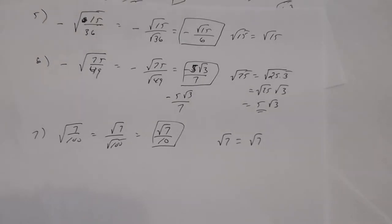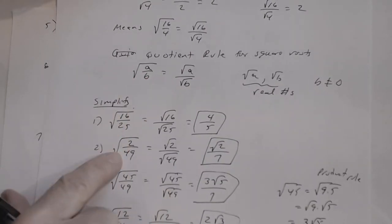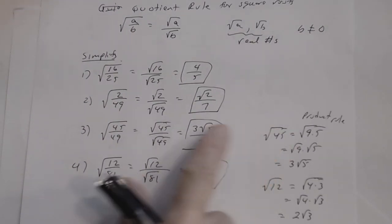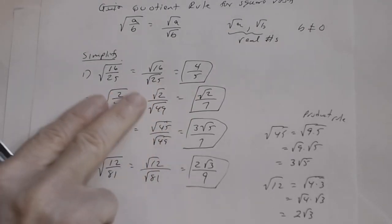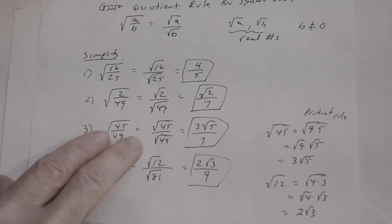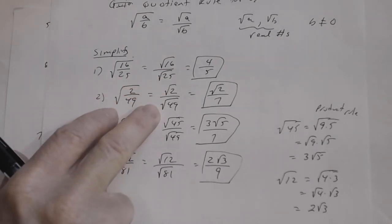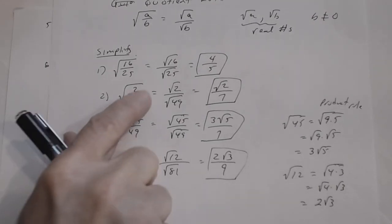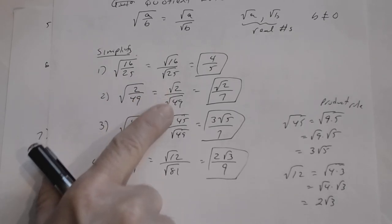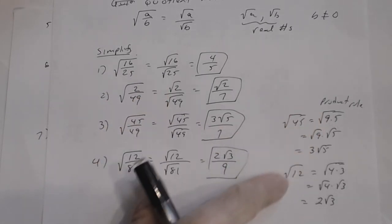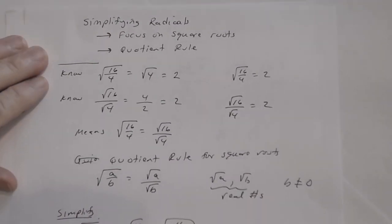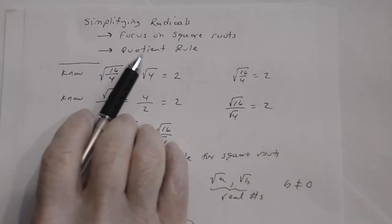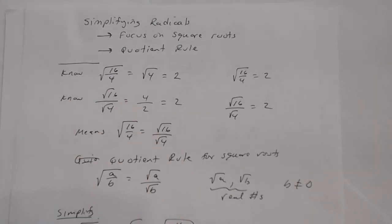Notice that when using the quotient rule, there were times we also had to simplify the numerator and denominator further. In all these problems, the radicands in the denominators were all perfect squares — that's not always going to be the case, but it was in this lesson. The numerators sometimes required using the product rule to simplify further. That's the end of this lesson on simplifying radicals using the quotient rule for square roots.